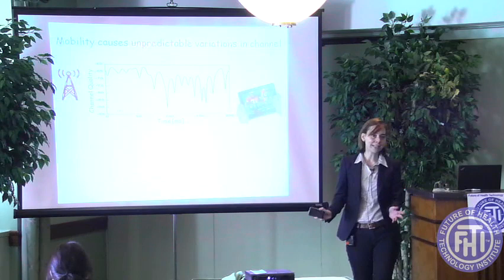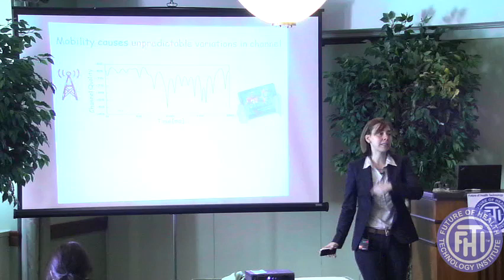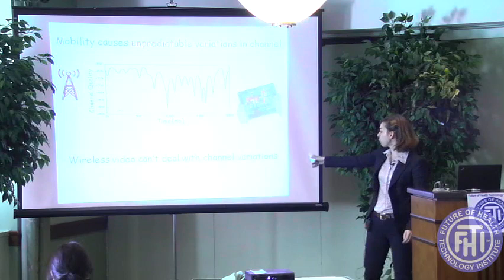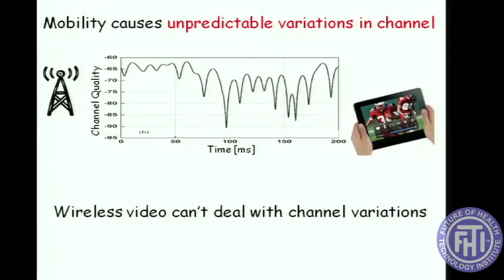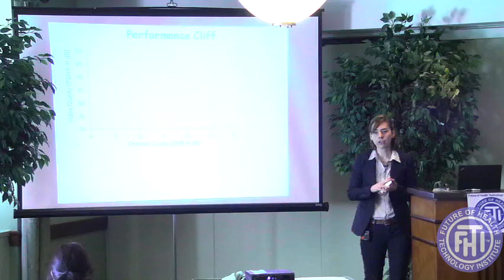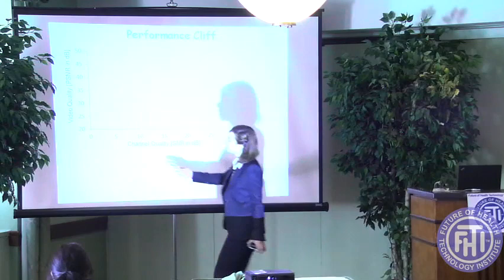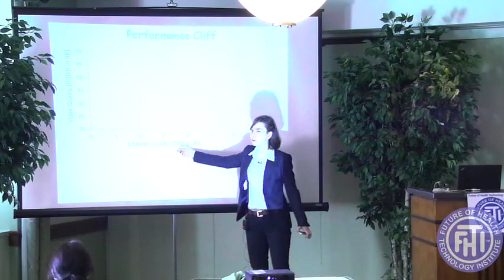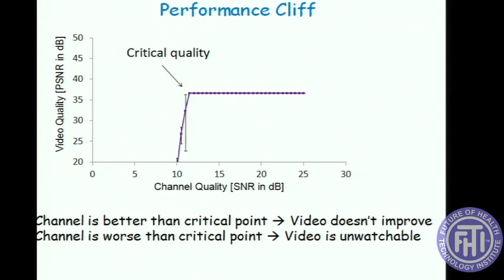This is problematic because all of our current wireless technology cannot deal well with high variation of channel quality — it cannot transmit video that works well for all channel variations. This is a known problem. In technical terms, it's called the performance cliff of mobile video, or wireless video in general. If you plot the video quality as a function of channel quality — what we typically refer to as channel SNR — you will find a cliff effect.